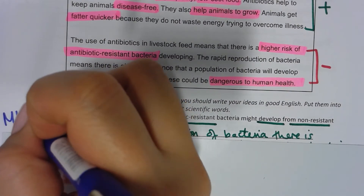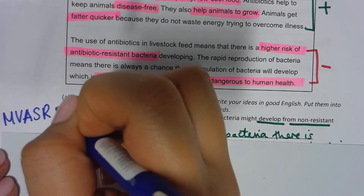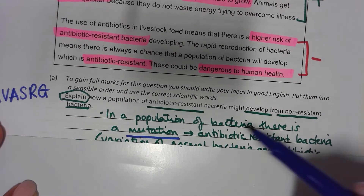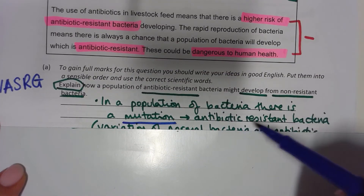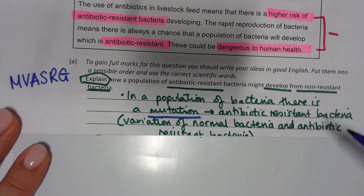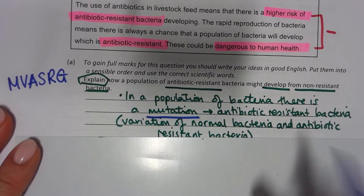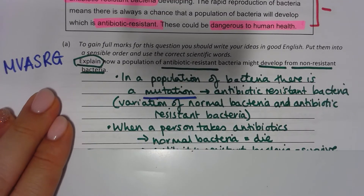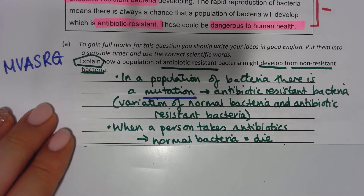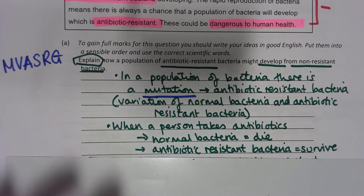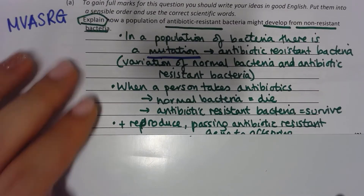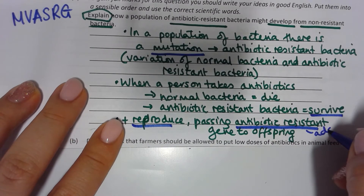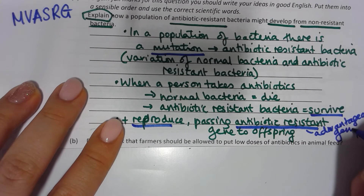Explain how a population of antibiotic-resistant bacteria may develop from non-resistant bacteria — think: mutation, variation, advantageous characteristics, survive, reproduce, advantageous genes. In a population of bacteria there is a mutation producing an antibiotic-resistant bacterium. There is variation: normal bacteria and antibiotic-resistant bacteria. When antibiotics are taken, normal bacteria are killed. The resistant bacteria survive, reproduce, and pass on their advantageous antibiotic-resistant gene to their offspring.